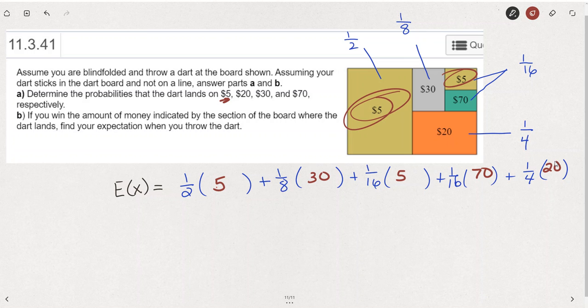If we do this multiplication, we'd end up with $255 over 16. I just put each of those in my calculator: 5 fraction 2 plus 30 fraction 8 plus 5 fraction 16 and so on, and got $255 over 16. And then if you divide this and round to the nearest cent, you could get the final answer for the expectation.